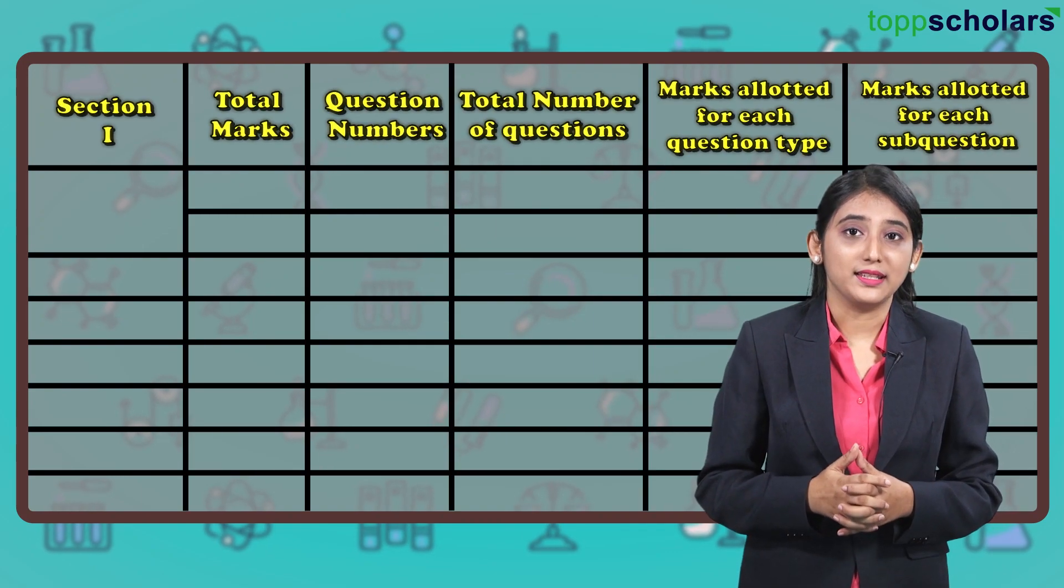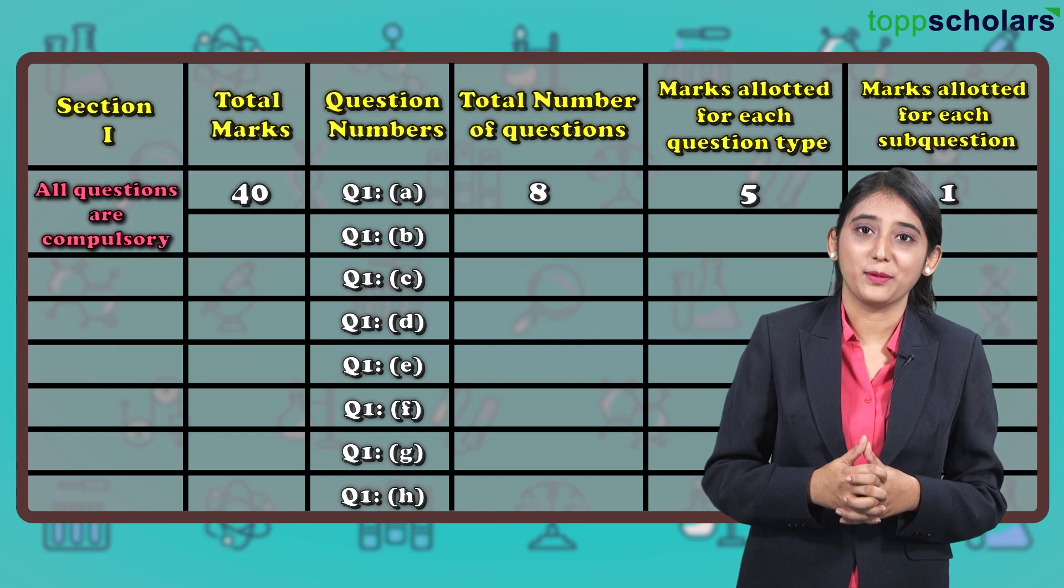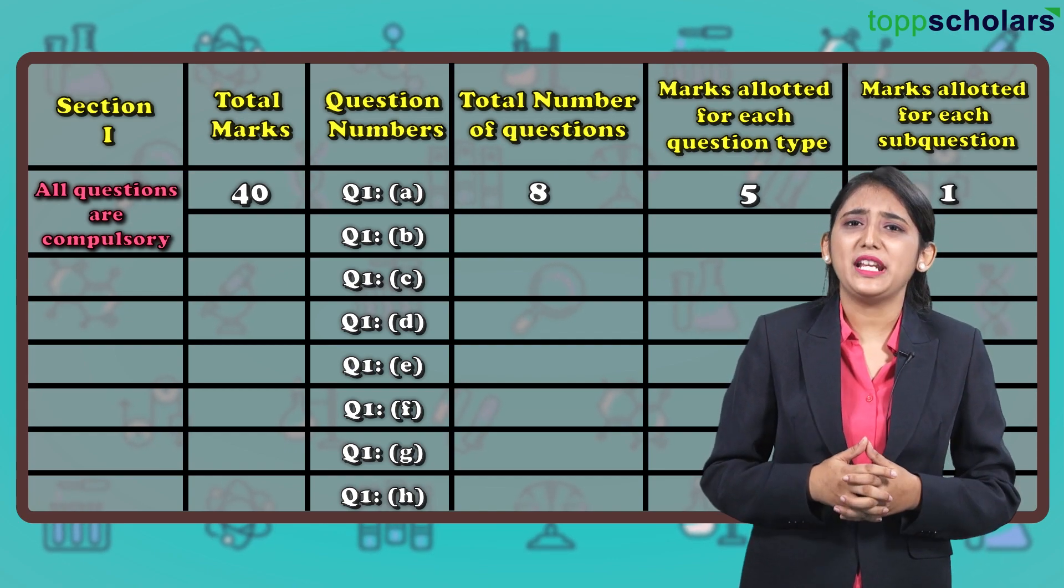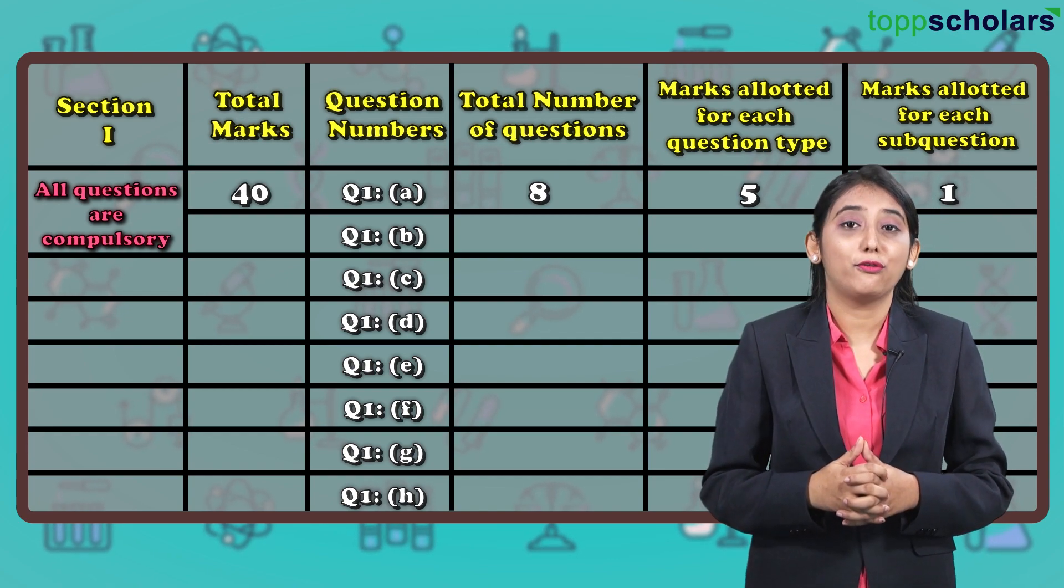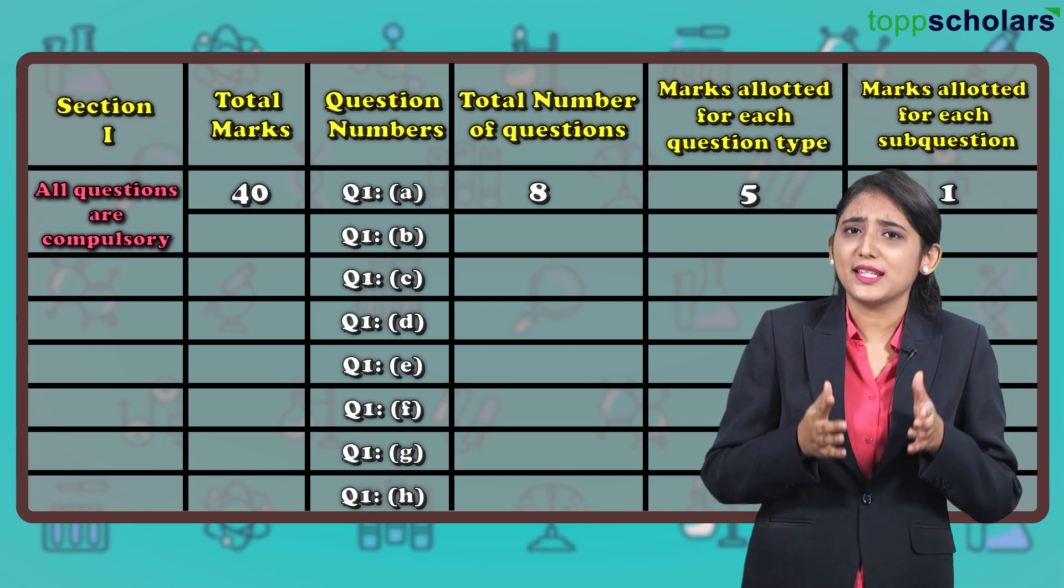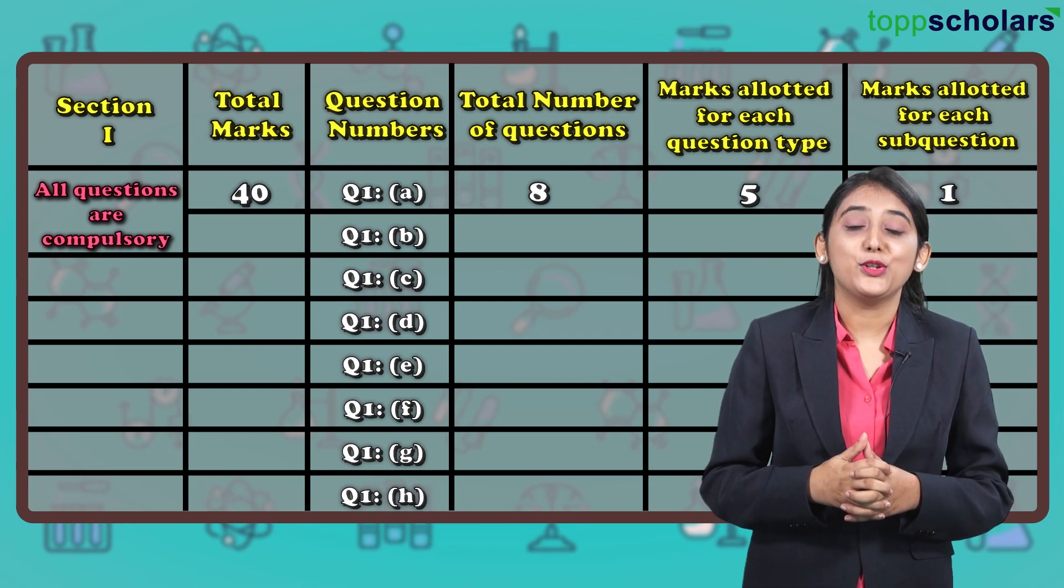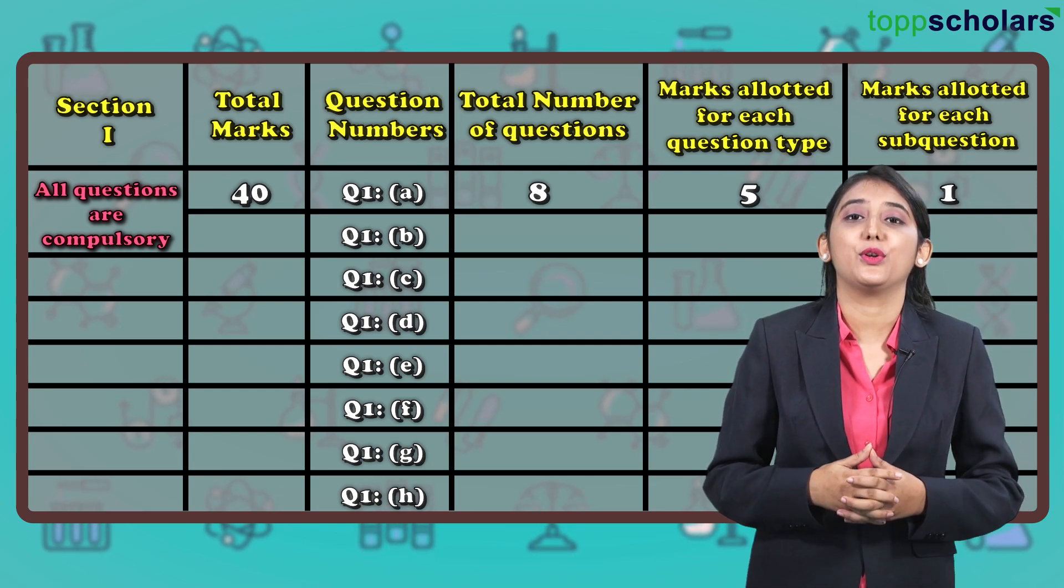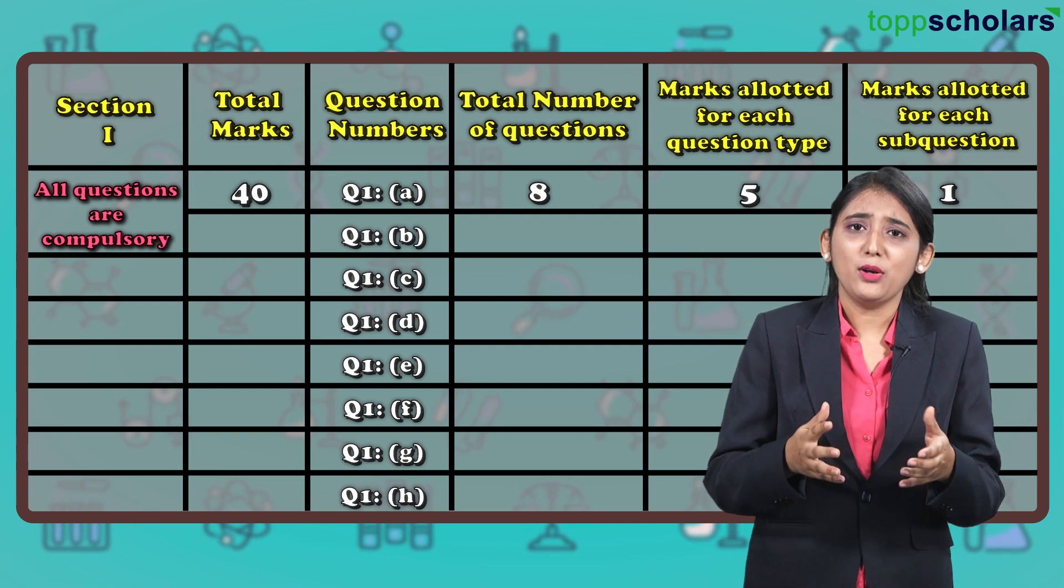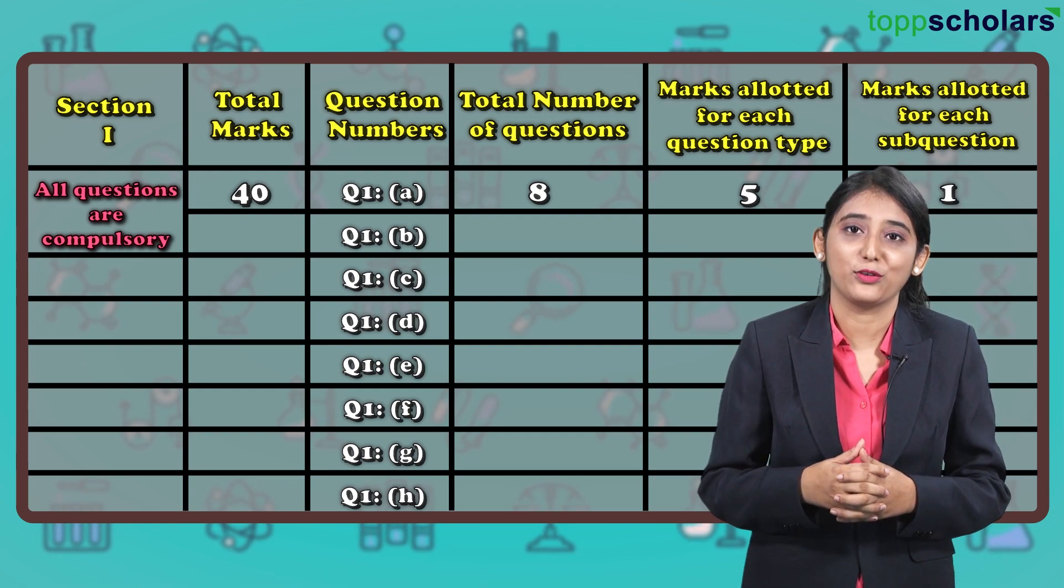Question 1 has questions A to H, that is a total of 8 questions. Marks allotted for each question type is 5 marks, and the marks allotted for each sub-question is 1 mark. That is 8 into 5, which gives you a total of 40 marks. Now let us have a look at the type of questions that are involved in this section.